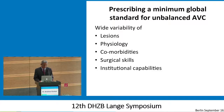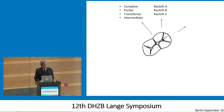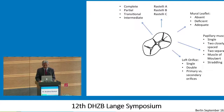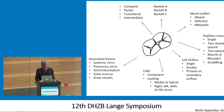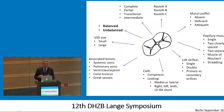The maximum variability is in the lesions themselves. There's variability in physiology, comorbidities, and in surgical skills and institutional capabilities. If you take AV canal across the board, the anatomy can be complete, partial, or intermediate; then you have the Rastelli classification; the mural leaflet could be adequate, absent, or deficient; papillary muscles could be single, two closely spaced, or straddling left AV valve. You have a whole range of possibilities, apart from being balanced and unbalanced — and each influences the other. A subtly unbalanced AV canal with a single papillary muscle or a leaking AV valve becomes much more complex. There is just an extraordinary level of complexity.